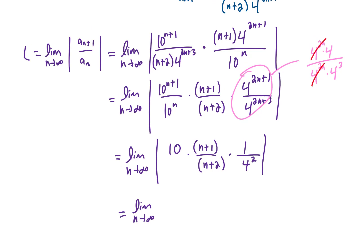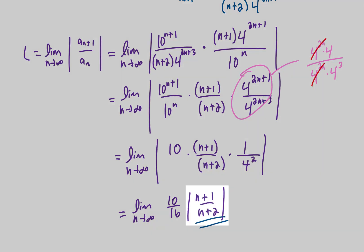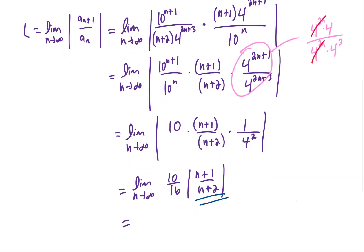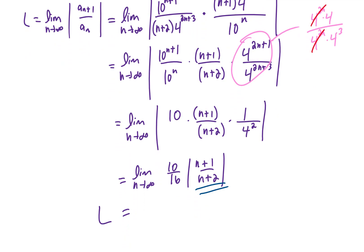And when we simplify you can pull a 10 out from the numerator and a 16 out from the denominator, and you get 10/16 out in front and you have an (n+1) divided by (n+2). Now if we take a limit of this thing right here as n goes to infinity, that limit is just going to go to 1. So the limit of the entire term, or what we're calling L, is simply 10 over 16 which reduces to 5/8.